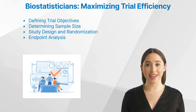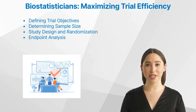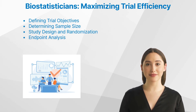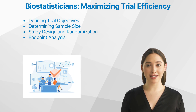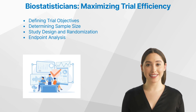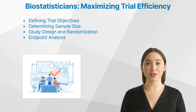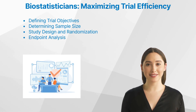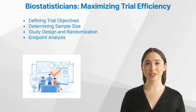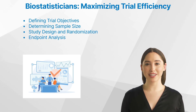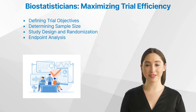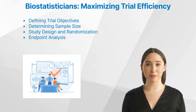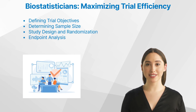Determining sample size. Sample size determination is a critical step in trial planning. Biostatisticians employ statistical power calculations to determine the optimal number of participants needed to detect a meaningful treatment effect. Factors such as expected effect size, variability, and confounders are considered to ensure the trial has sufficient statistical power. By accurately estimating the sample size, biostatisticians help avoid underpowered or overly resource-intensive trials.